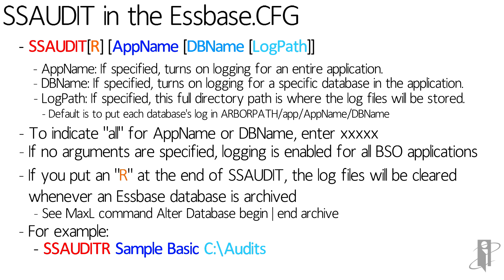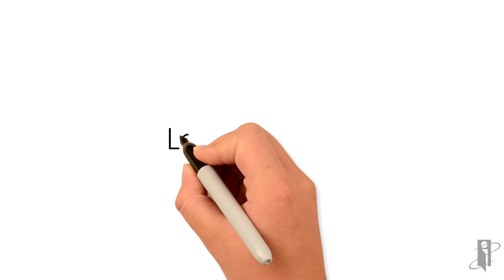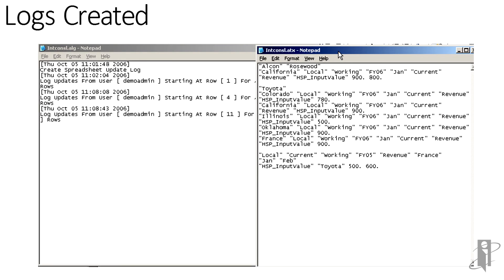That log path does have to be a fully qualified directory. When you turn on logging, you're creating a pair of files. The first file will be the database name followed by .alg. This file keeps track of who changed something, when they changed it, and also how many rows they updated.